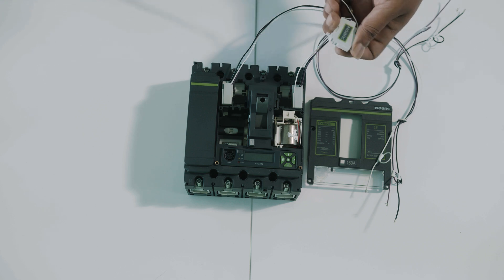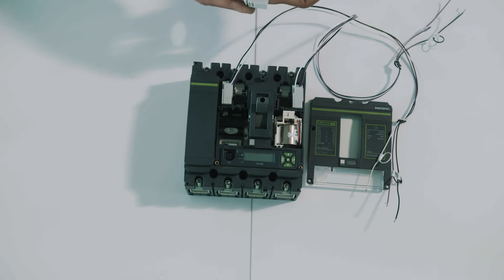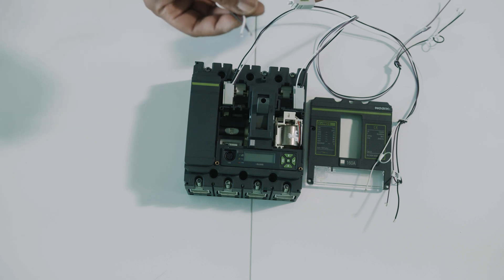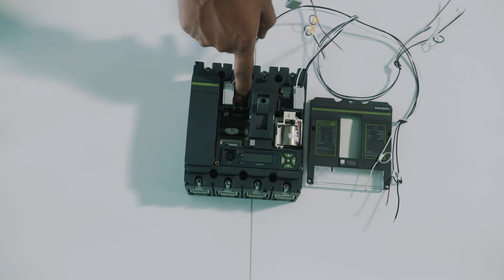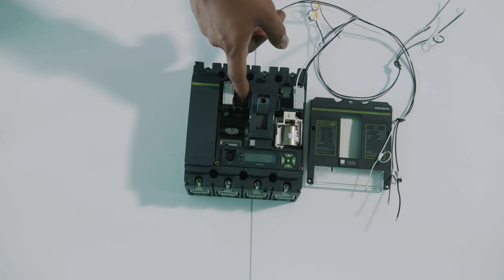Now we are going to install the signal contact. The signal contact is a similar device than the auxiliary contact but it will only change the status when the circuit breaker is on the trip position. It means when some fault occurred and is going to be able to provide a signal to the control room or control unit that the circuit breaker is in a trip status and needs to be checked. In this case for the frame size EX9M2 the position of the signal contact is in this gap.